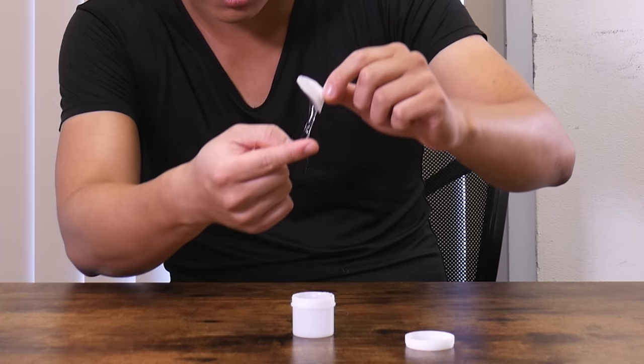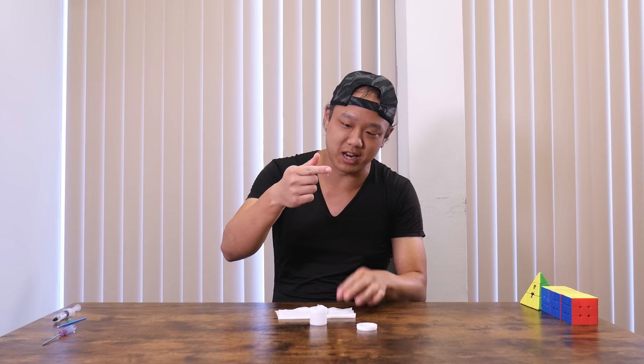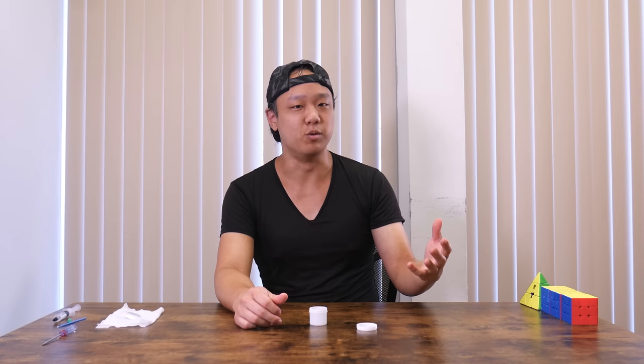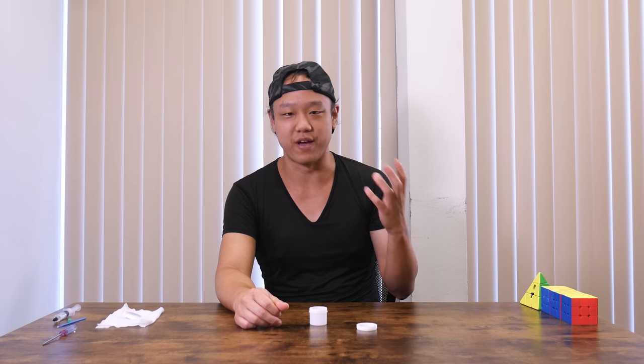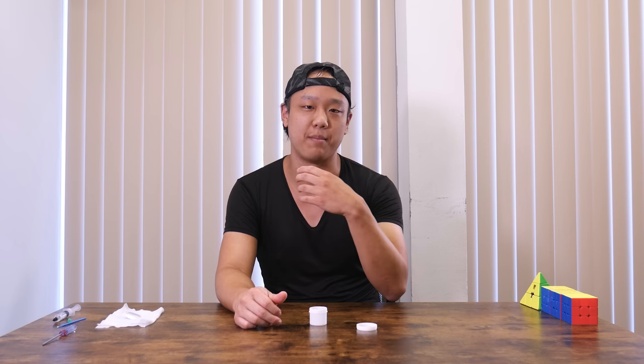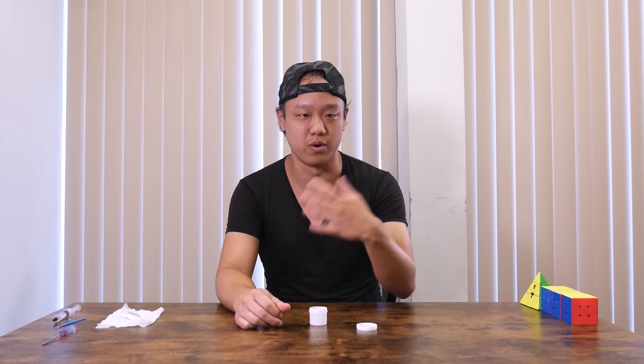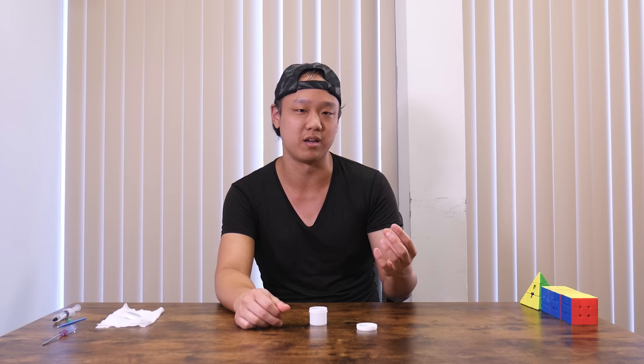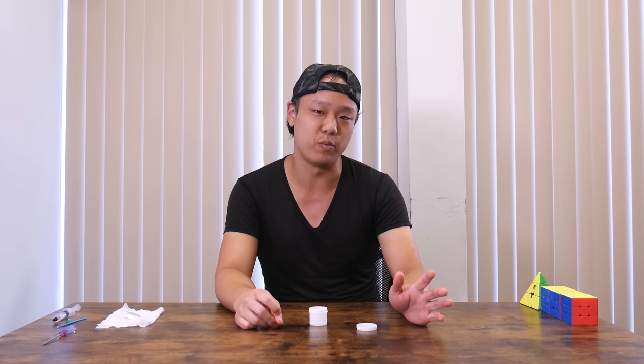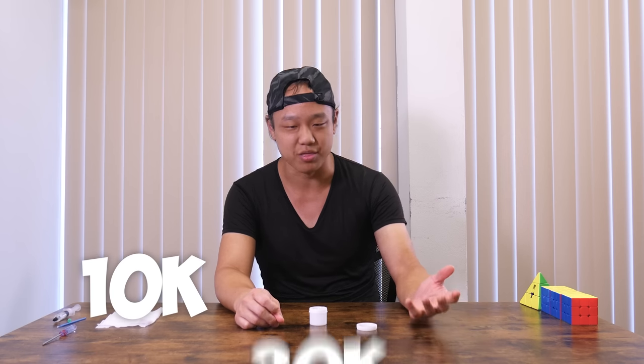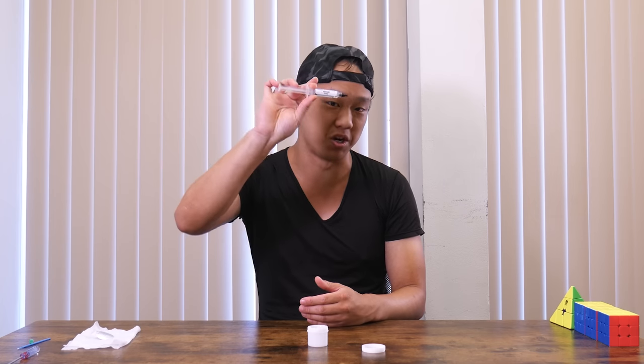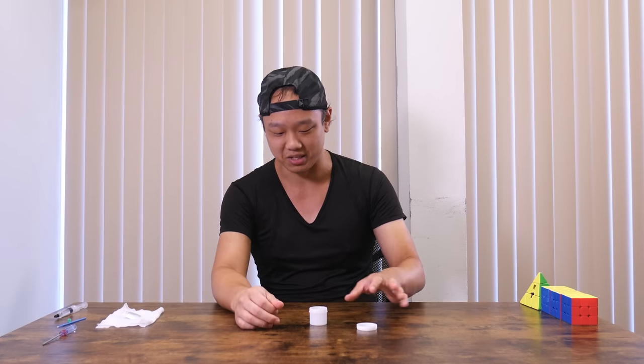So most silicone-based lubes have this rating system where the manufacturer uses a number to describe how thick the lube is. The higher the number, the thicker the lube is going to get, and the lower the number, the more runny it is and the more like water it is. Most lubes we have are around 10,000, 30,000, 50,000. That's what this one here is, but this one is a million. Look how thick this thing is, it's crazy.